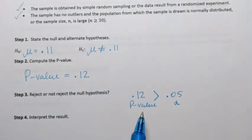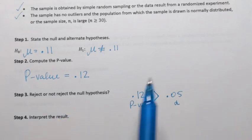Since the p-value is greater than alpha level of significance, we do not reject the null hypothesis.